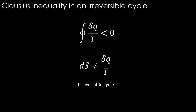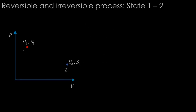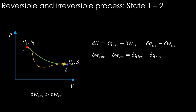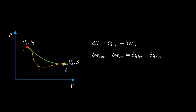To understand further, consider a single process where the system goes from state 1 to state 2 — say an expansion — along two paths: reversible and irreversible. State properties, internal energy and entropy, change between these states. Work done in the reversible process is greater than in the irreversible case. From the first law, du equals dq irreversible minus dw irreversible. Since du is the same in both cases, rearranging gives: dw reversible minus dw irreversible equals dq reversible minus dq irreversible.